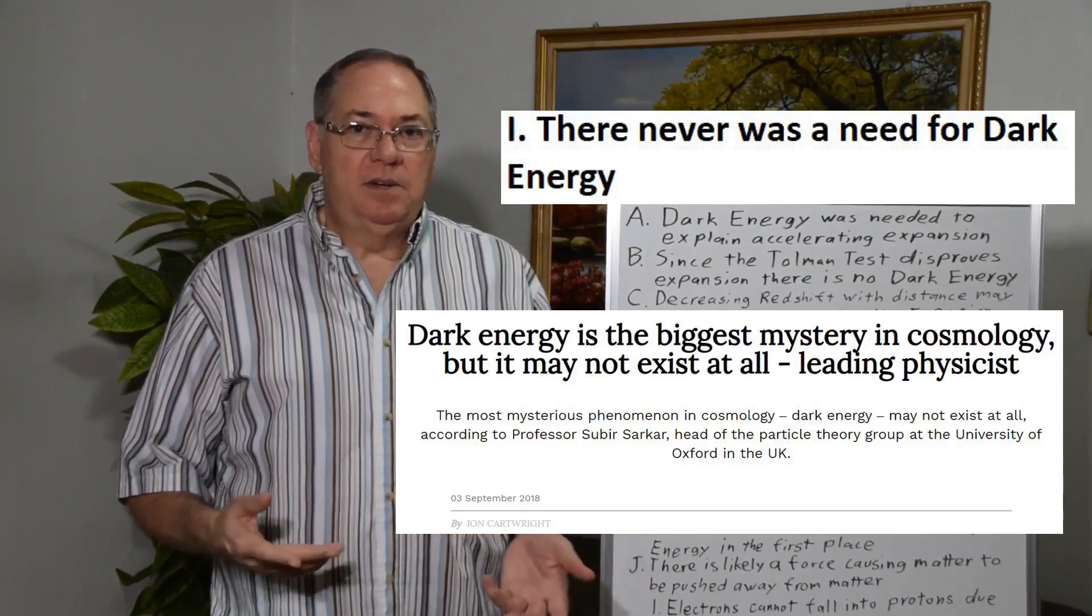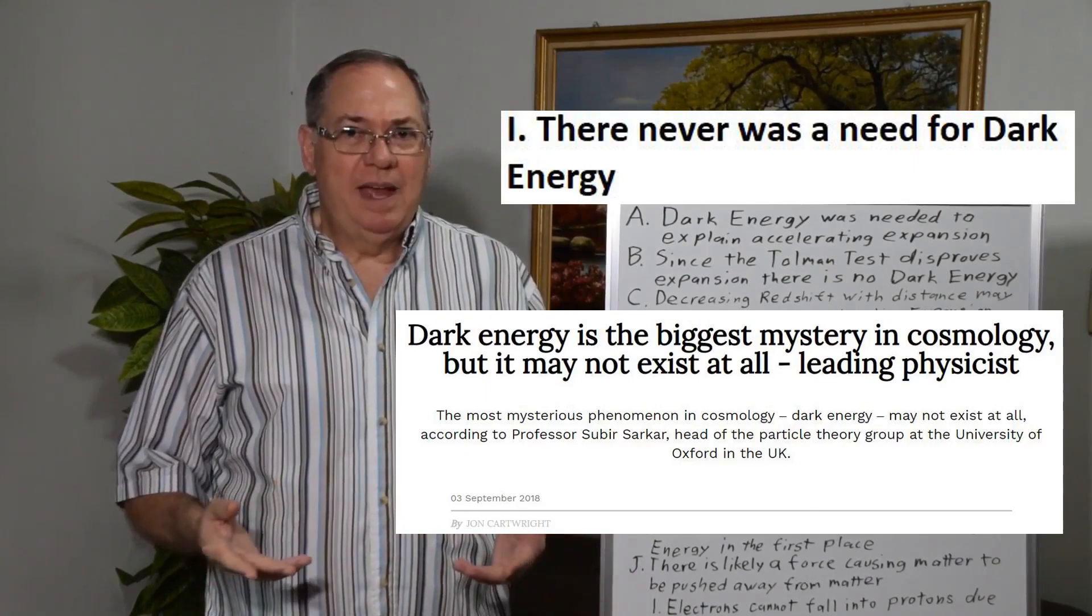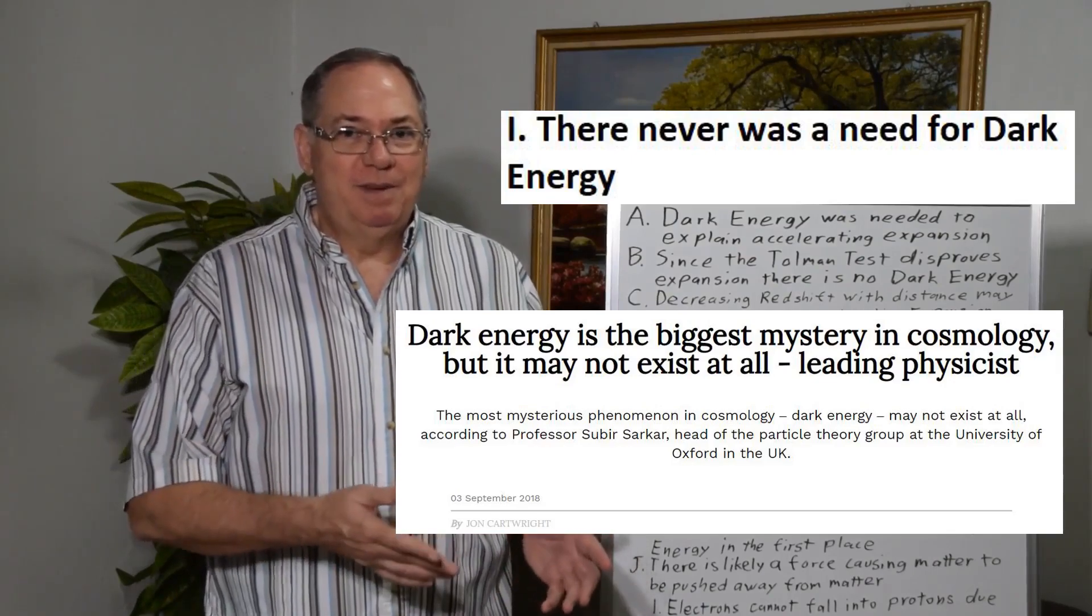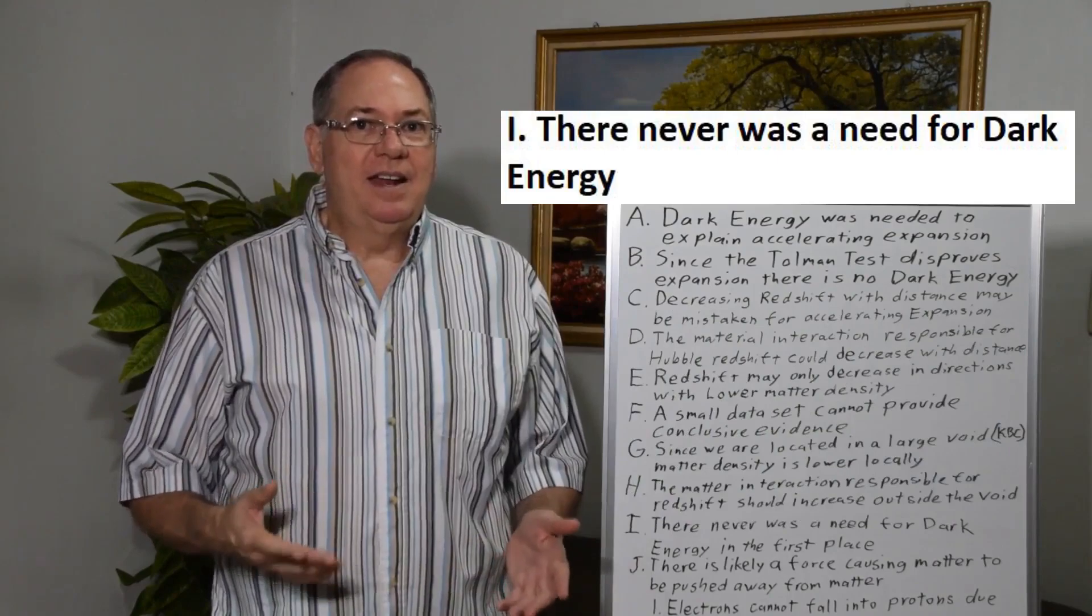And with the 2-sigma certainty, physicists usually don't do anything with that. They wouldn't globally say there must be dark energy because we have 2-sigma certainty that there might be dark energy. That's not enough certainty.